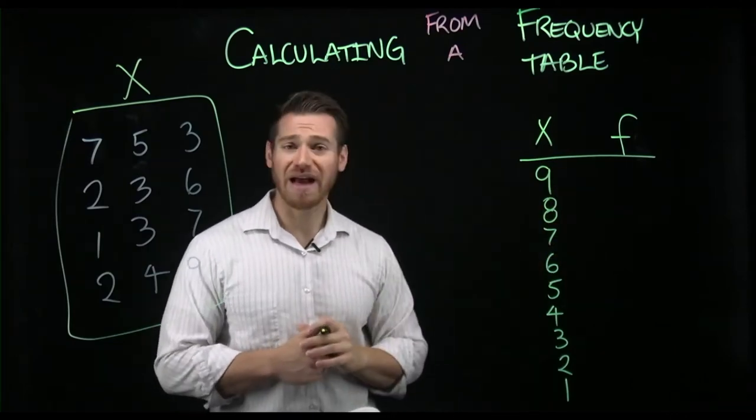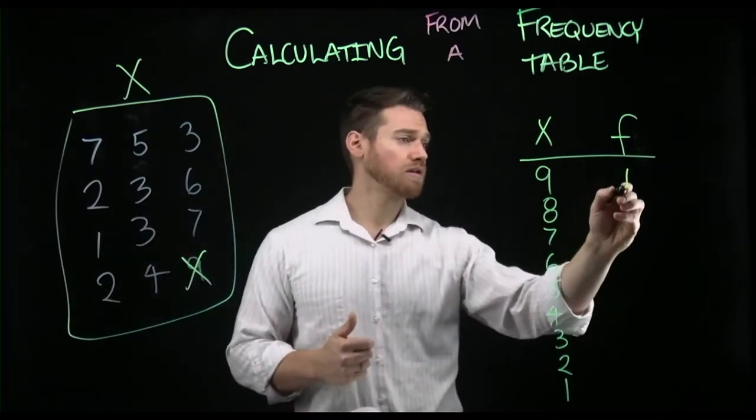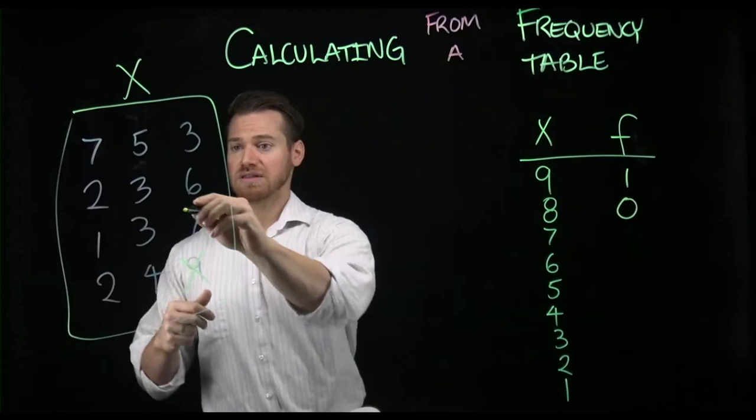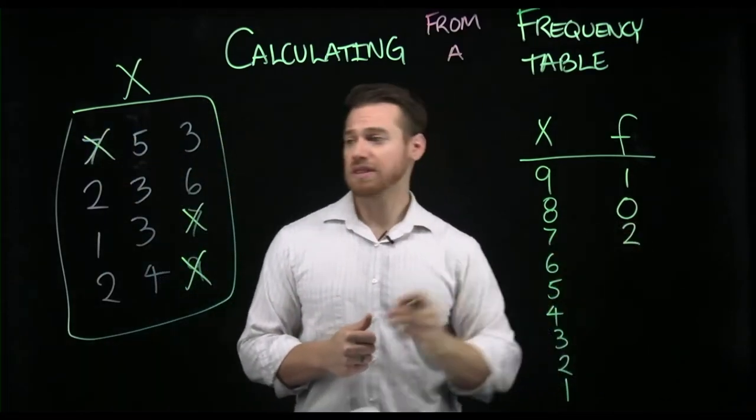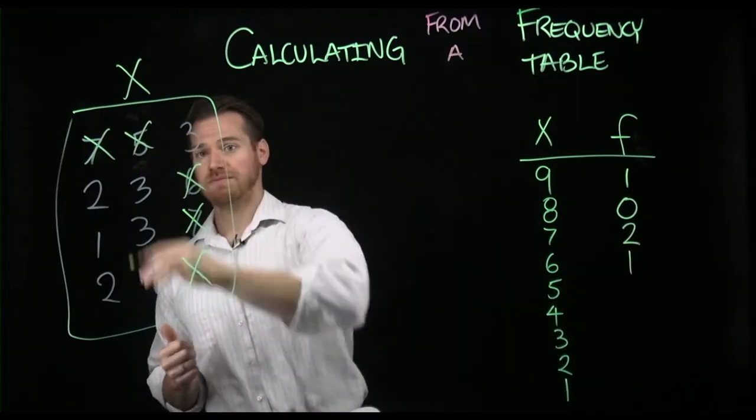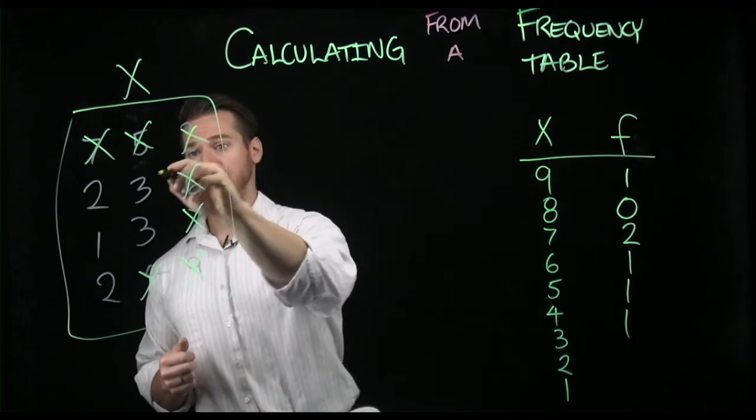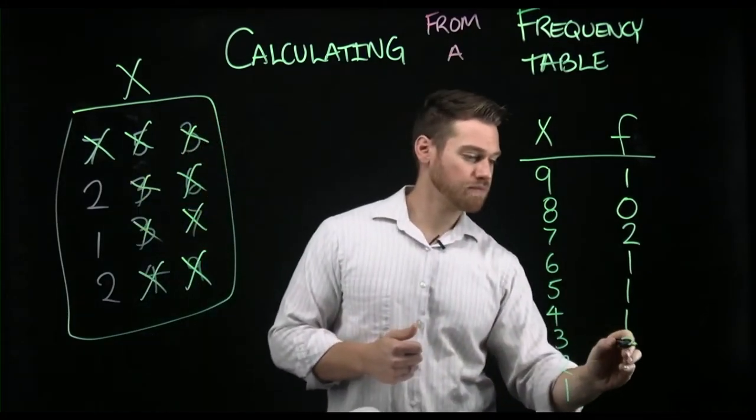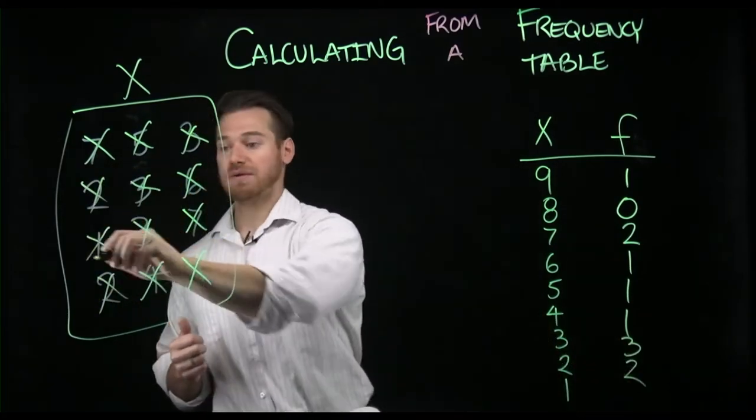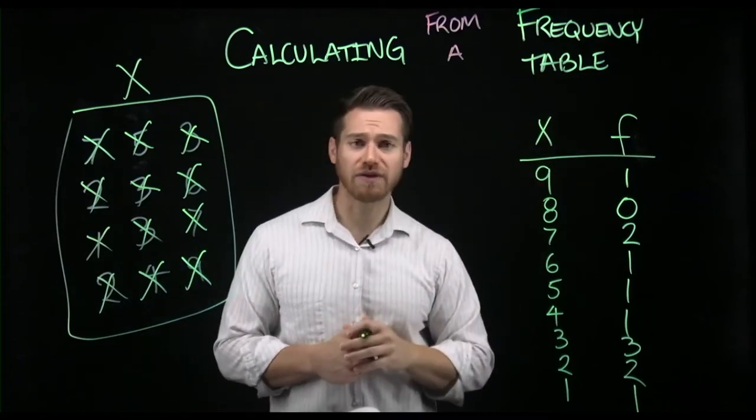And next to it, we're going to put how often that score is taken in our data. So we say, well, how many nines are there? I see one. How many eights? Zero. Sevens? One, two. Sixes? One. Fives? One. Fours? One. Threes? One, two, three. Twos? One, two. And ones? One. And so that now is a frequency table that represents the scores of x and how often those scores are taken.